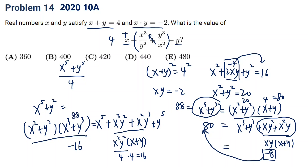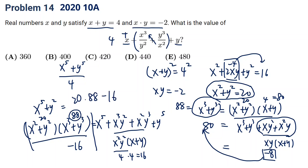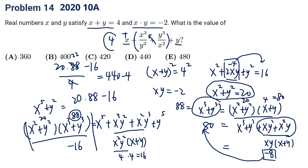So x³ plus y³ equals 88. Then x⁵ plus y⁵ equals 88 times x²y² minus 16. Since x²y² equals 20, this is 20 times 88 minus 16, which equals 440. And remembering there's a plus 4 from the setup, the final answer is 440.